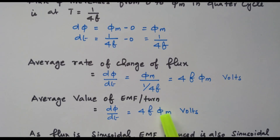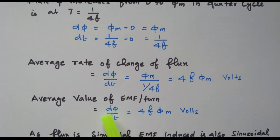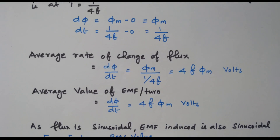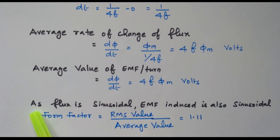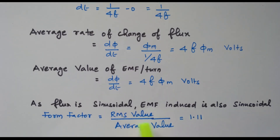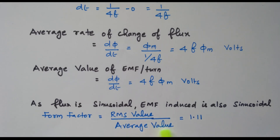The average value of EMF per turn: based on Faraday's law, the EMF induced is the rate of change of flux, E = dφ/dt. So the average EMF per turn is 4FφM. Now we need to find the RMS value. Since flux is sinusoidal, the EMF induced is also sinusoidal. The form factor equals RMS value divided by average value, which for a sine wave is 1.11. Therefore, RMS value equals 1.11 times the average value.